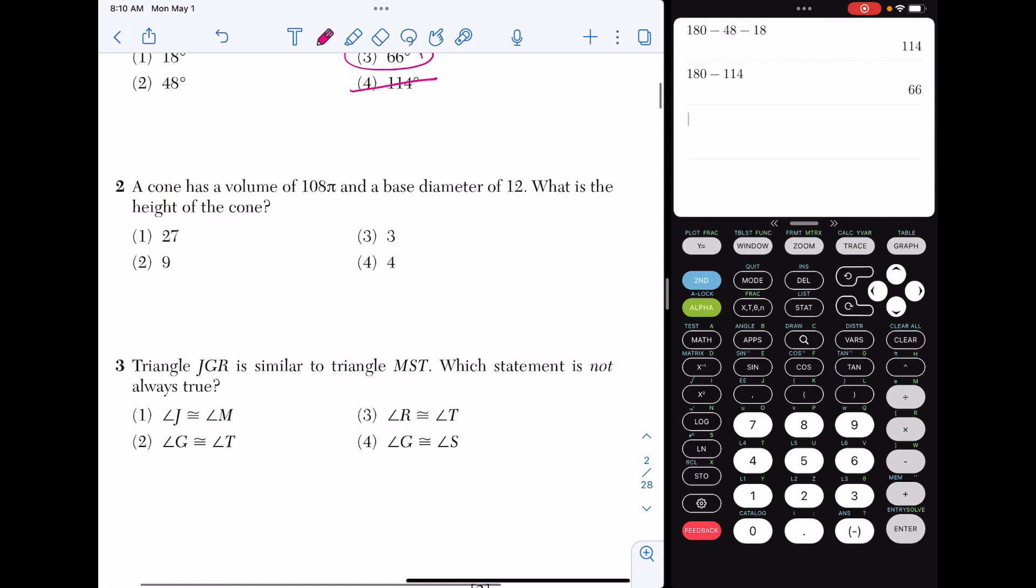Number two, a cone has a volume of 108π and a base diameter of 12. Let's keep in mind that means the radius is 6. What is the height of the cone? Anytime you see volume, head to your reference sheet in the back of your Regents exam to grab the volume formula. So here is volume of a cone.